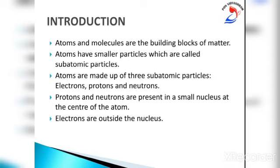Atoms of all elements are made up of the three subatomic particles, except hydrogen. The hydrogen atom is made up of only one electron and one proton — it does not contain any neutron. The atoms of different elements differ in the number of electrons, protons and neutrons.